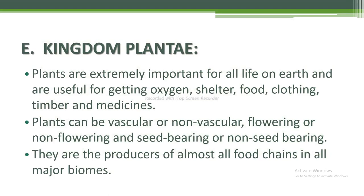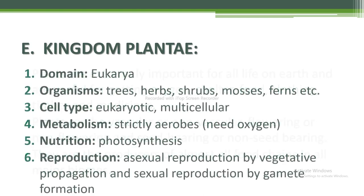Next is kingdom Plantae. Plants are extremely important for all life on earth and are useful for oxygen, shelter, food, clothing, timber, and medicines. Plants can be vascular or non-vascular, flowering or non-flowering, and seed-bearing or non-seed-bearing. They are the producers of almost all food chains in all major biomes. Domain is Eukarya. Organisms include trees, herbs, shrubs, mosses, and ferns. Cell type: eukaryotic and multicellular. Metabolism: strictly aerobic. Nutrition: photosynthesis. Reproduction: asexual by vegetative propagation and sexual by gamete formation.